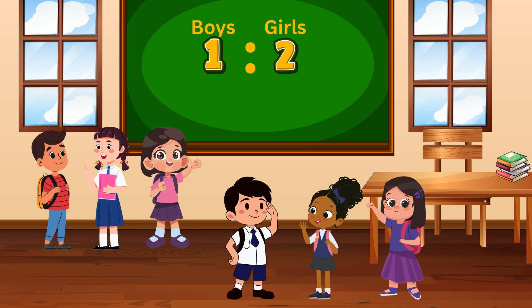This means that two to four and one to two are equivalent ratios. In other words, they show the same relationship.